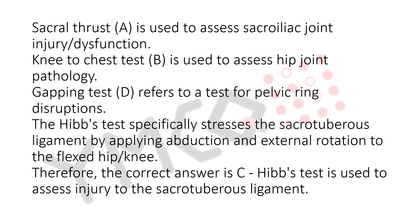The Hibs test specifically stresses the sacrotuberous ligament by applying abduction and external rotation to the flexed hip and knee. Therefore, the correct answer is C. Hibs test is used to assess injury to the sacrotuberous ligament.